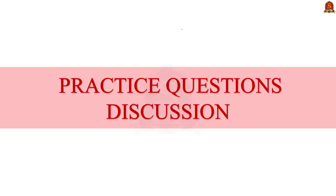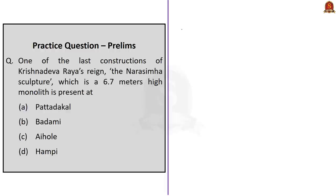With this, we came to the end of the news article discussions. Now let us see some preliminary practice questions. The first question is about Krishnadevaraya's regime: 'The Narasimha sculpture, which is a 6.7-meter-high monolith, one of the last constructions of Krishnadevaraya's regime, is present at — Option A: Pattadakal, Option B: Badami, Option C: Aihole, Option D: Hampi.' The correct answer is Option D: Hampi. We already covered this in the news discussion.